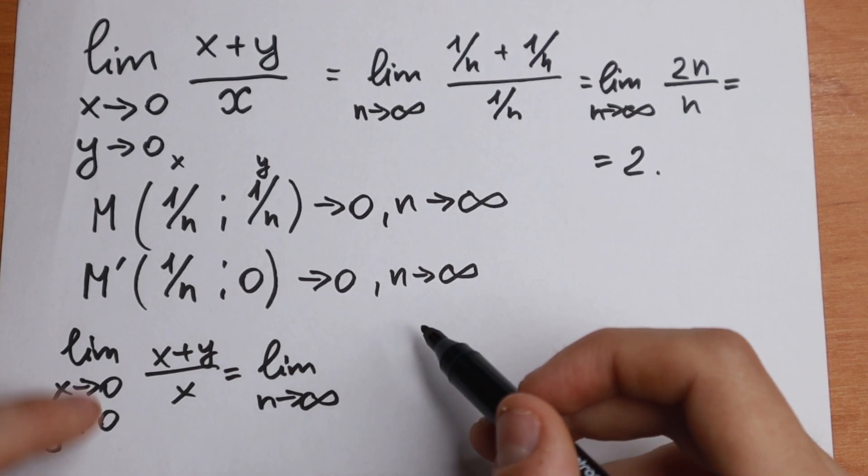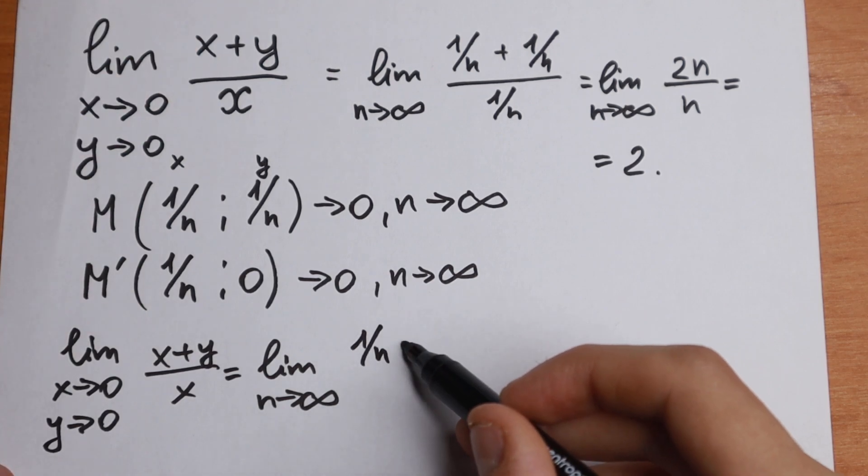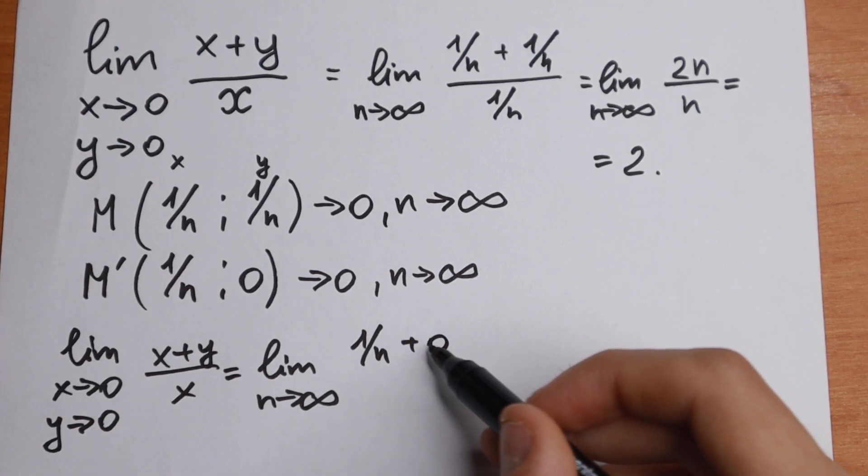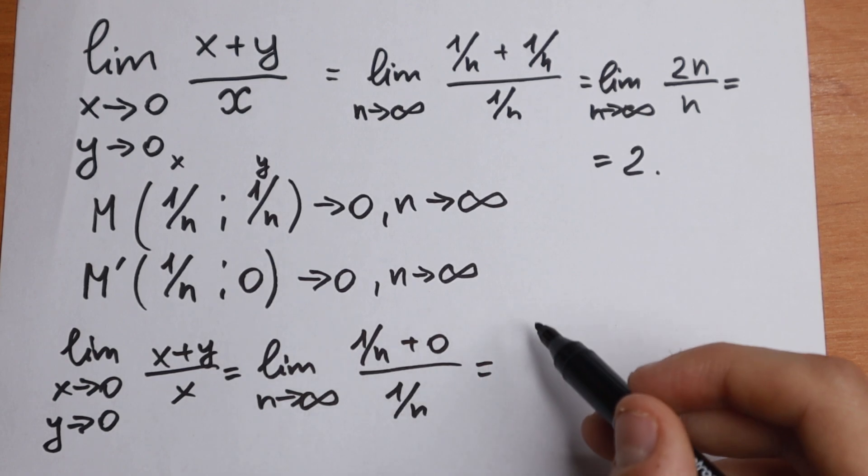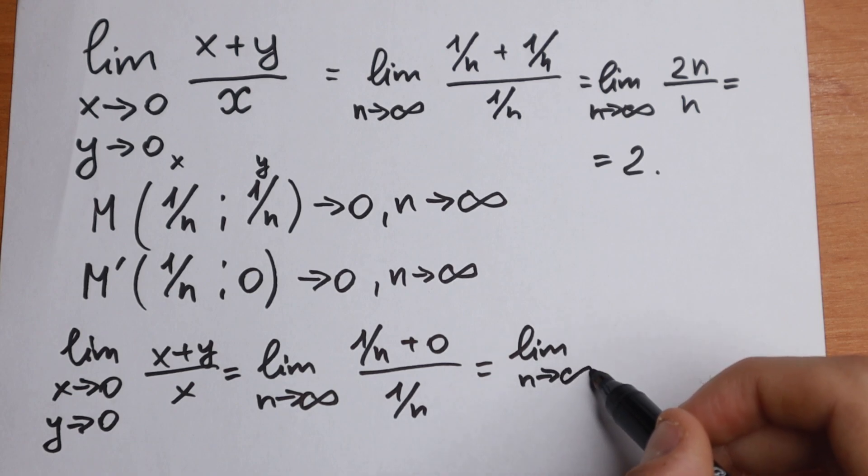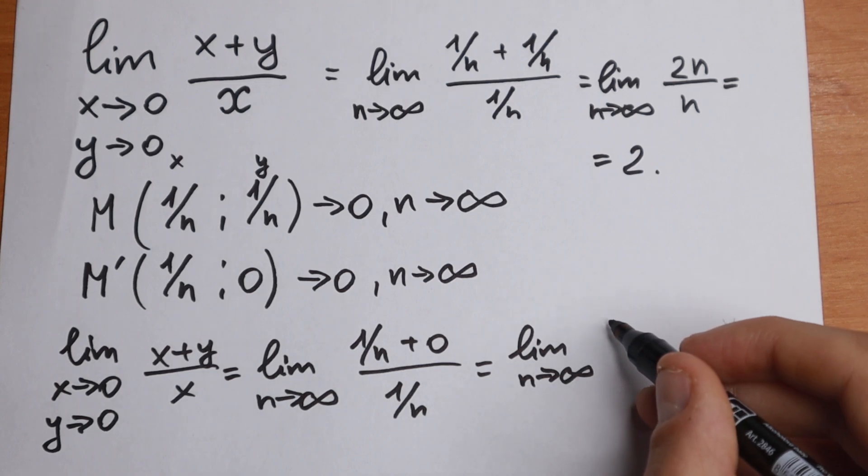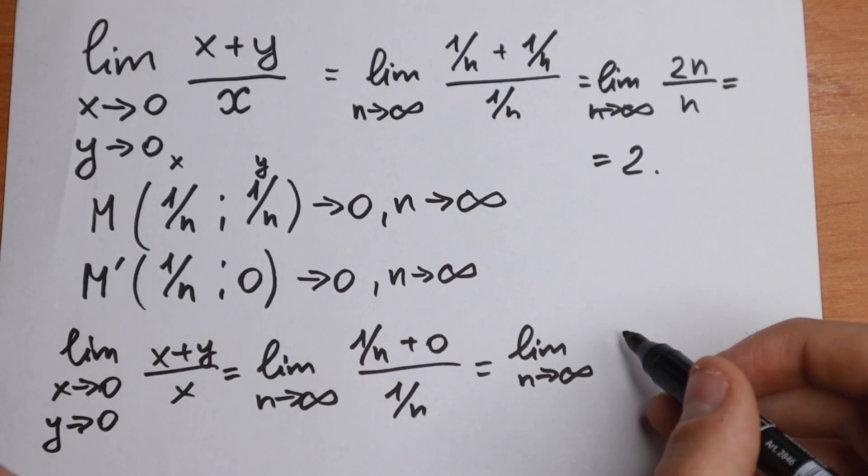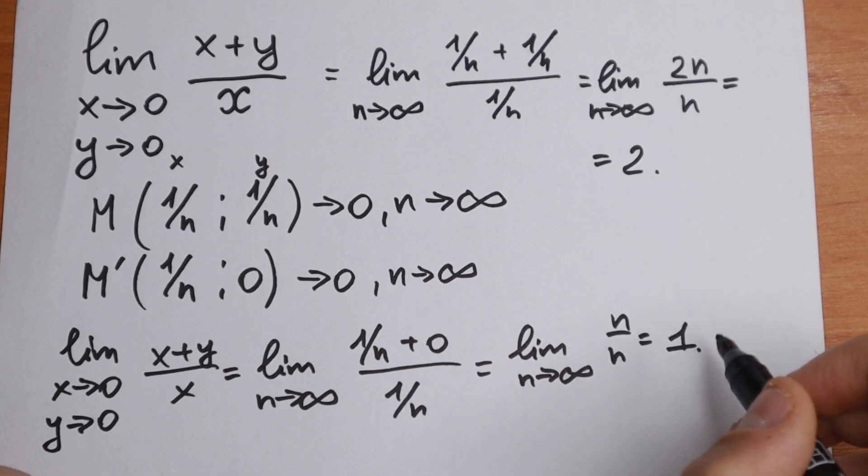and plus 0, this is our y, and all over 1 over n. As you can see we will have limit n approaches to infinity, and if we divide it into the same elements, we will have, for example, n over n or 1 over n. After all simplifying methods, we will have that this limit will be equal to 1.